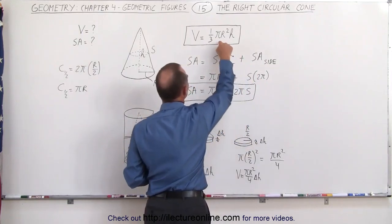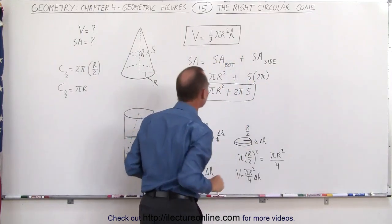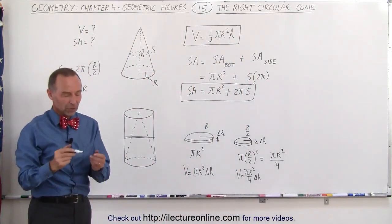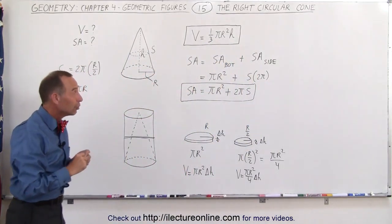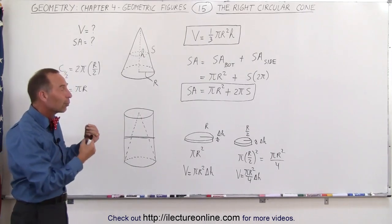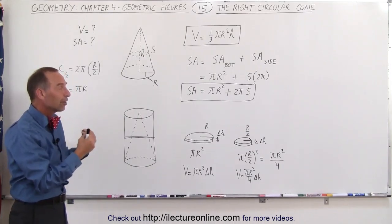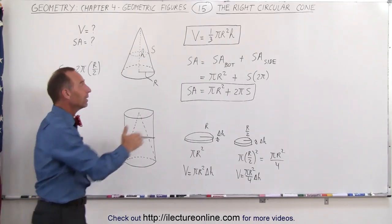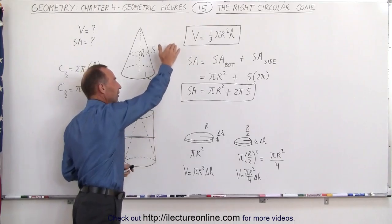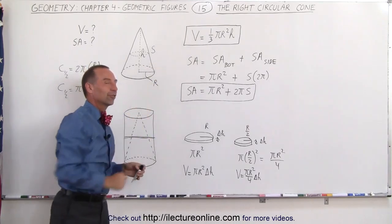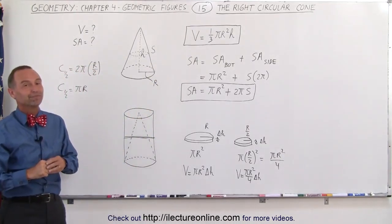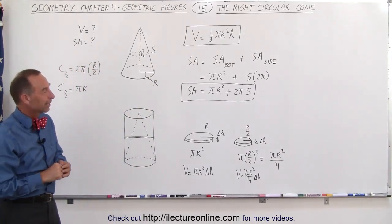That is the surface area of the right circular cone, and the earlier result is the volume. So without using more advanced mathematics, we got a pretty good sense of why these are the correct equations for the volume and surface area of the right circular cone. And that's how we did that.